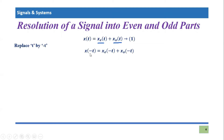So this equation will become x(-t) = x_e(-t) + x_o(-t), because wherever we found t, we have replaced it with minus t. Now the next thing we know is that for the even signal